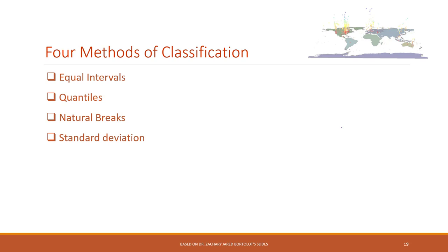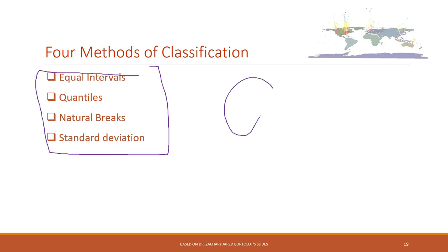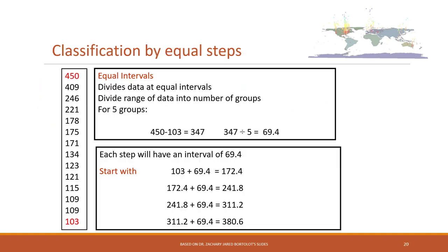That is why data classification is very important. If we want to make consistent comparisons, we need to use the right and at least consistent data classifications. Normally there are four methods of data classification: equal intervals, quantile, natural breaks, and standard deviations. Many professional GIS tools like ArcGIS allow you to choose which type of data classification you want.